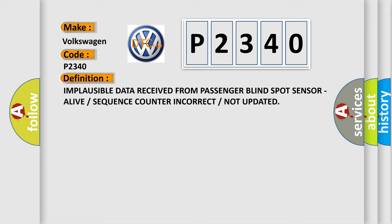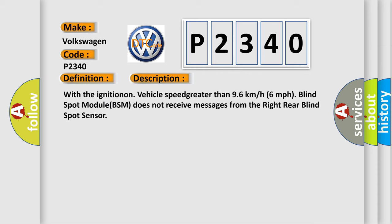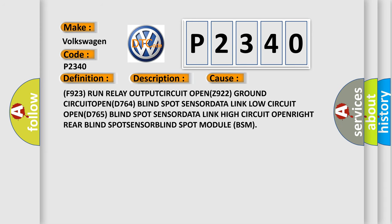With the ignition on and vehicle speed greater than 96 km/h (60 mph), the blind spot module (BSM) does not receive messages from the right rear blind spot sensor. This diagnostic error occurs most often in these cases: F923 run relay output circuit open, Z922 ground circuit open, D764 blind spot sensor data link low circuit open, D765 blind spot sensor data link high circuit open, right rear blind spot sensor B.